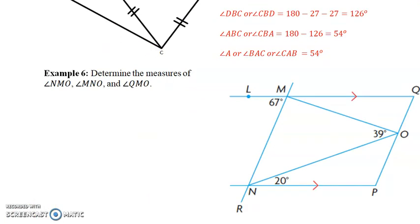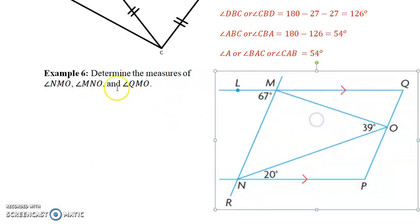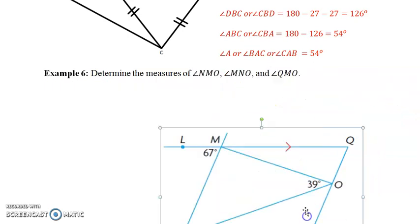And the last question, example 6 for section 2.3, we have this diagram, and what we want to do is determine angle NMO, this angle here, and angle QMO, this angle right here. These are parallel lines L, M, Q, and P, and these are two transversals.